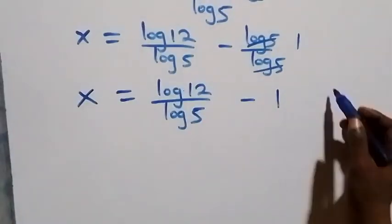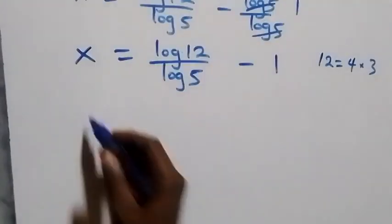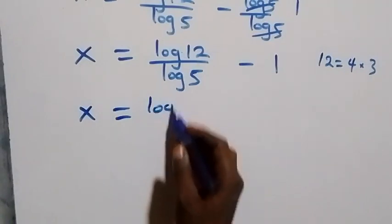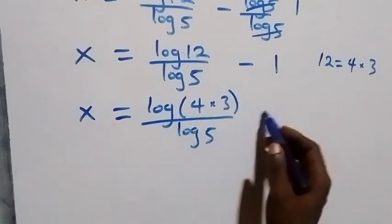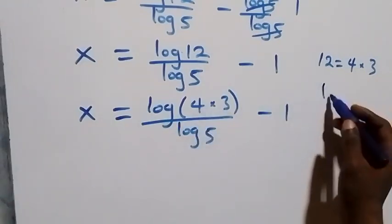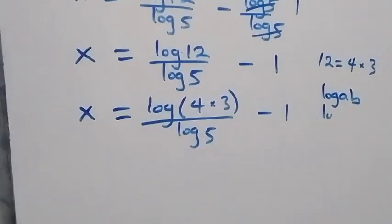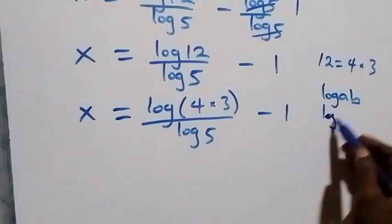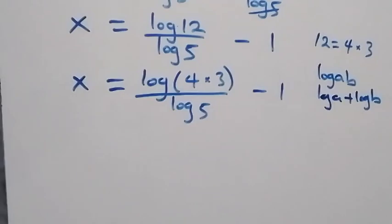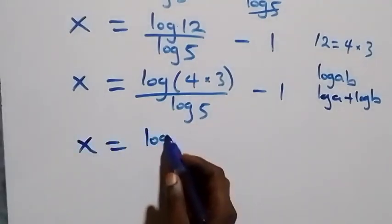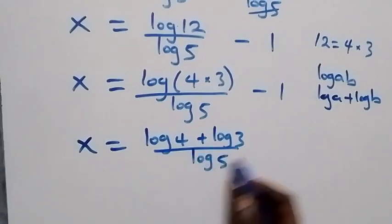From here we can express 12 as 4 times 3. This becomes x equals log(4 times 3) over log 5 minus 1. This follows the log product rule: log(a times b) is the same as log a plus log b. So this becomes x equals (log 4 plus log 3) over log 5 minus 1.